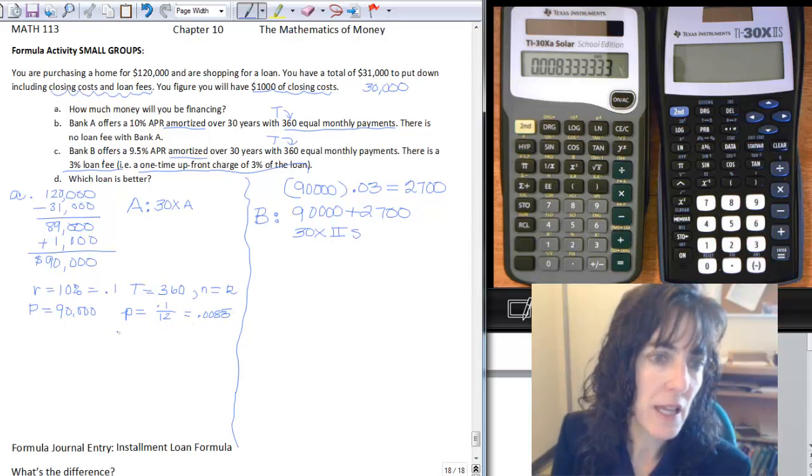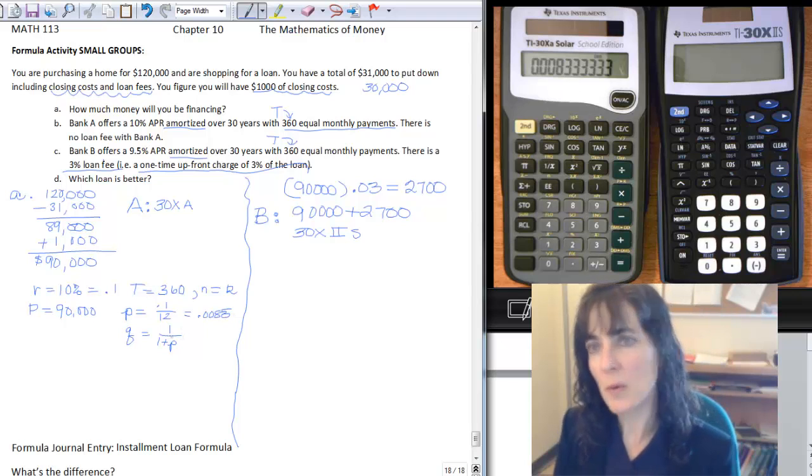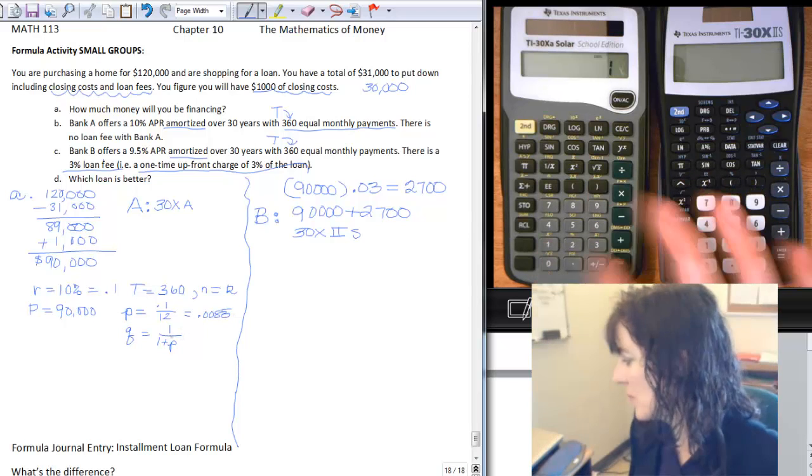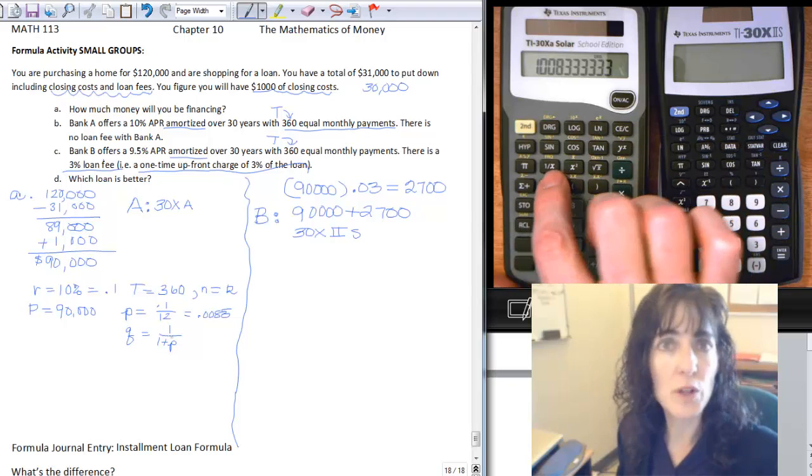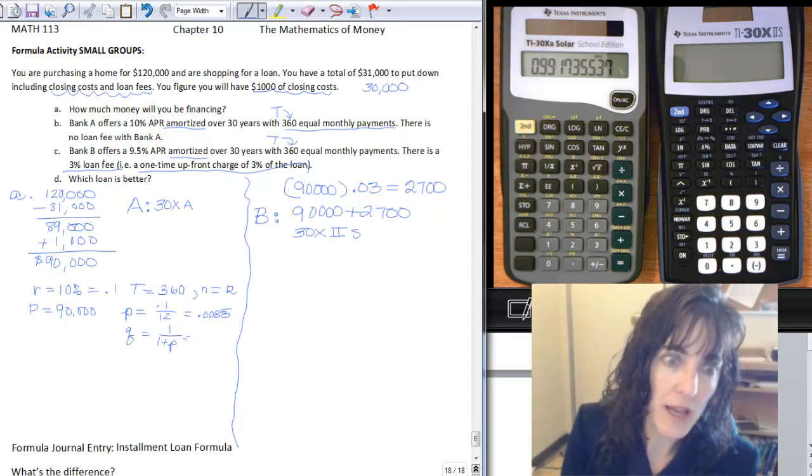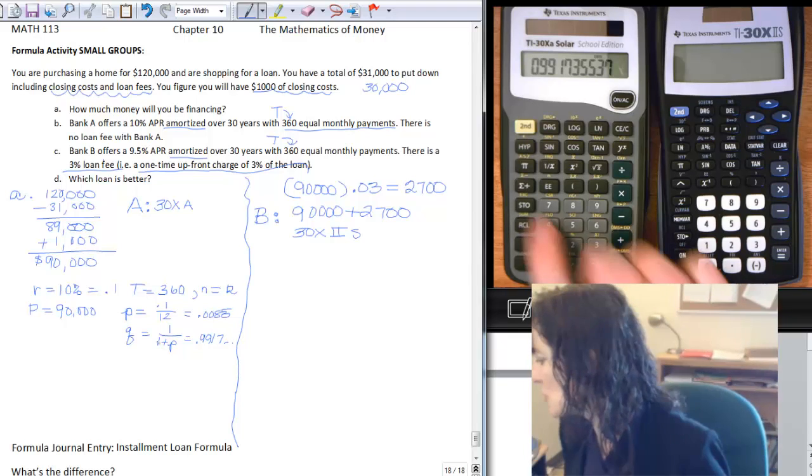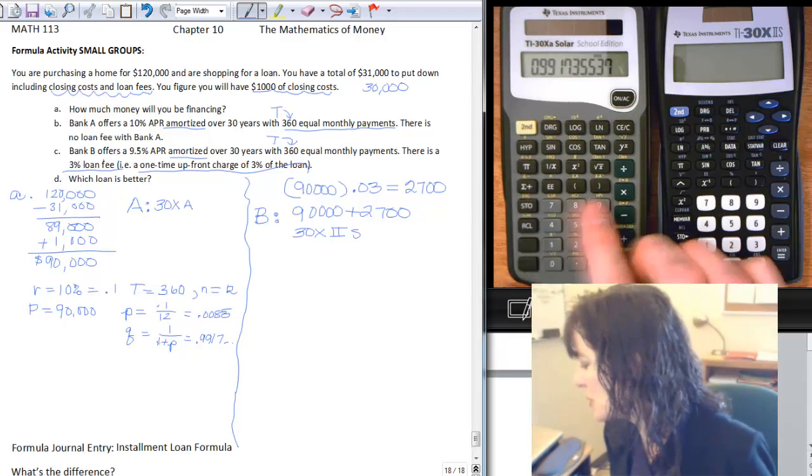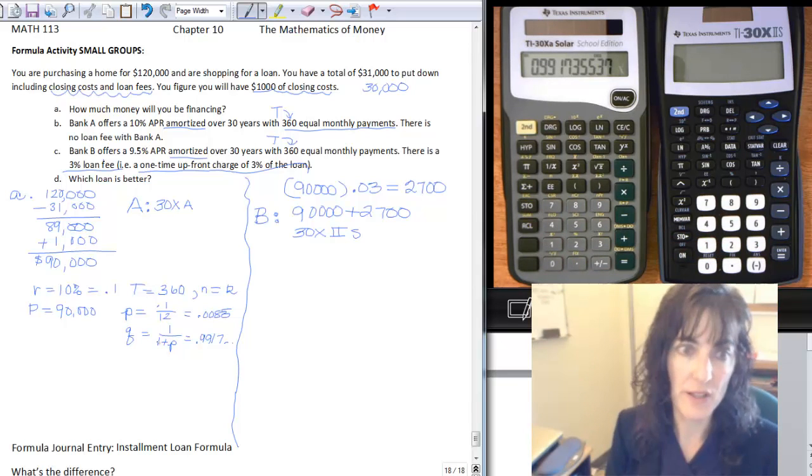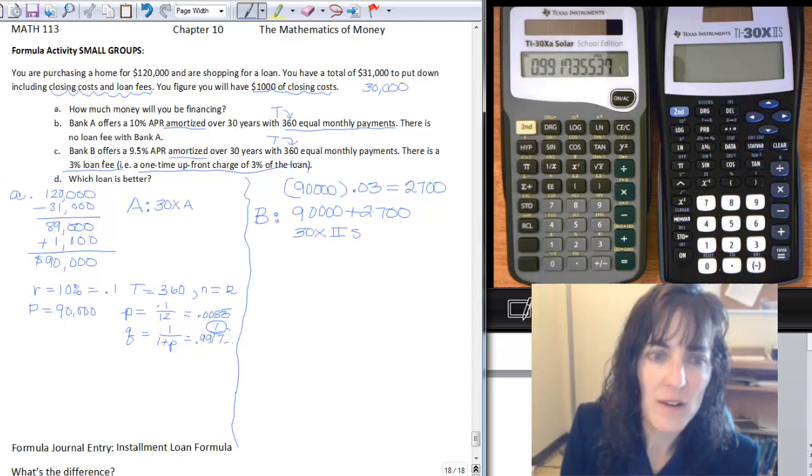And then I need to calculate my Q. So Q is 1 over 1 plus little p. And so I can go ahead right away and add the 1. And then do the inverse, so 1 over X. And then that's my Q. And that I will want to store. So 0.9917 and it goes on. So that I'll store it on this calculator. I push store and the number where I want to store it, and that's all you have to do. It doesn't give you any feedback. But I stored that one in number 1.